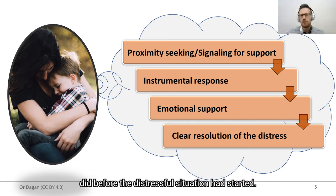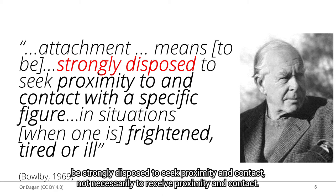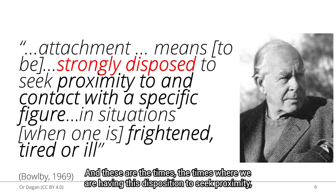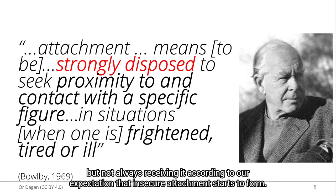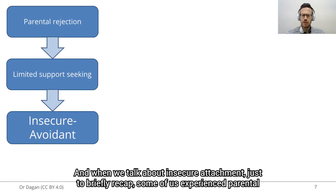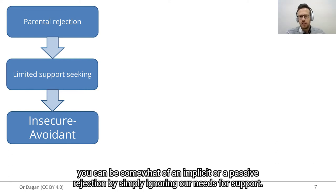But Bowlby said that attachment means to be strongly disposed to seek proximity and contact, not necessarily to receive proximity and contact. These are the times where we have this disposition to seek proximity, but not always receiving it according to our expectations, that insecure attachment starts to form. When we talk about insecure attachment, some of us experience parental rejection — maybe active rejection, such as 'stop crying, I don't want to help you' — but also it can be somewhat of an implicit or passive rejection by simply ignoring our needs for support.